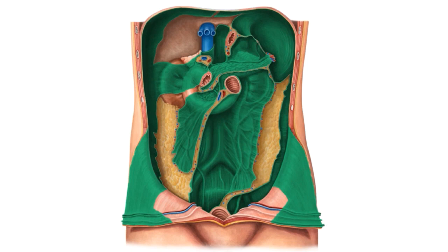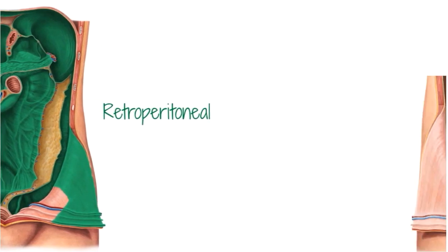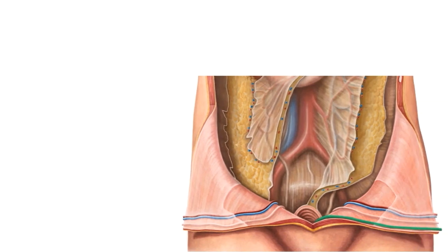It's good to keep in mind that the structures we're talking about today are also referred to as retroperitoneal. But before we start looking at the retroperitoneum, let's first have a look at some structures we can see within the parietal peritoneum.